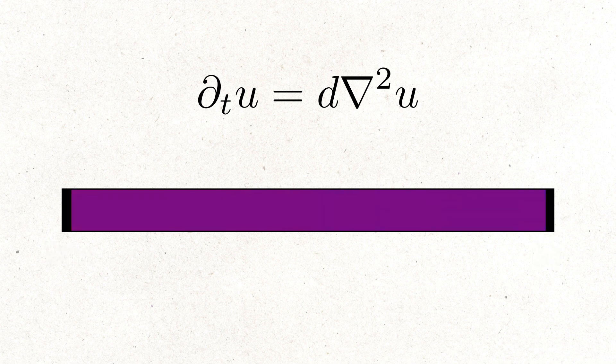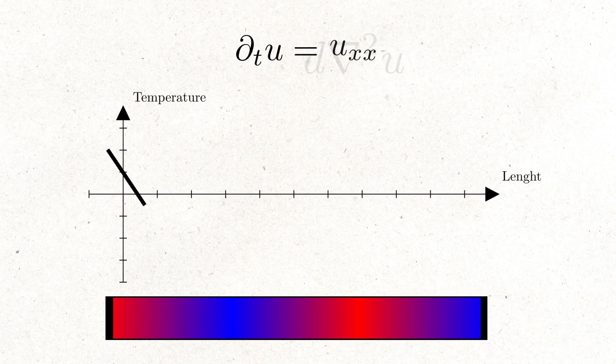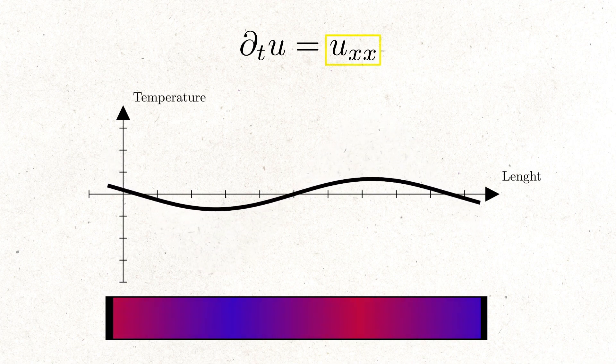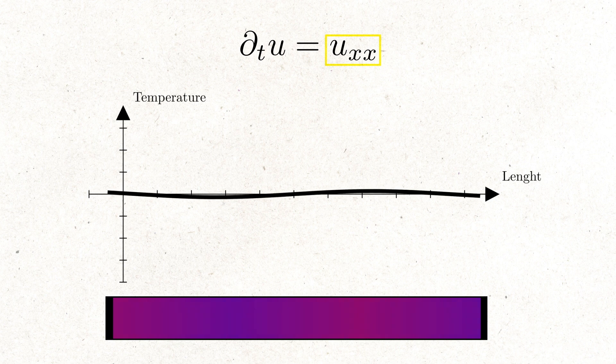Let's try to understand it on an example of heat. Suppose we are looking at a line and the temperature on this line is distributed as in this graph. We would expect that the places with higher temperature would get colder and the places with colder temperature would get warmer. As we can see from the graph, the coldest and the warmest places on the graph are exactly the places where the graph curves. How much graph is curved is measured by second derivative, so if the curve is bigger the temperature will change faster and vice versa.